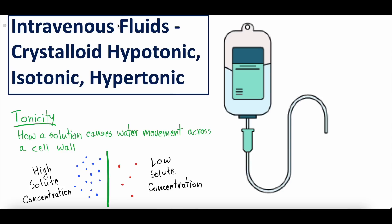Intravenous fluids — in our last intravenous fluid video, we talked about crystalloid versus colloid fluids. When we were talking about crystalloid, we mentioned that there are different types: hypotonic fluid, isotonic fluid, and hypertonic fluid. Today we're covering that. When we look at these words, we notice each one ends in 'tonic,' so we wanted to start by talking about the relevant concept of tonicity.